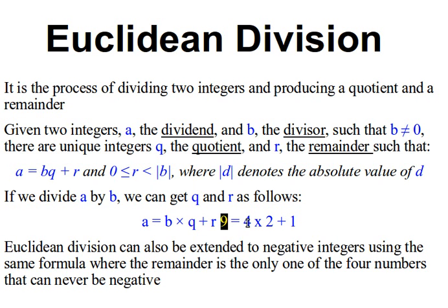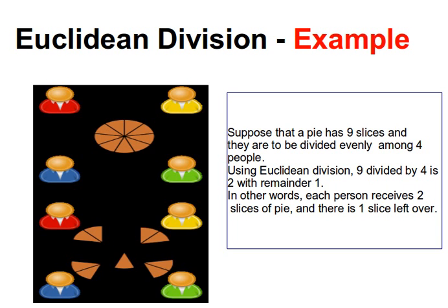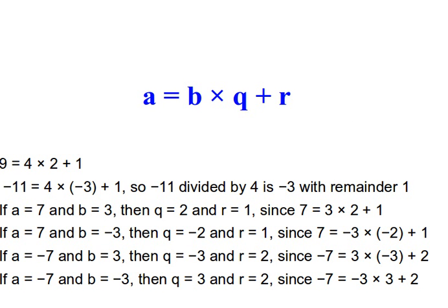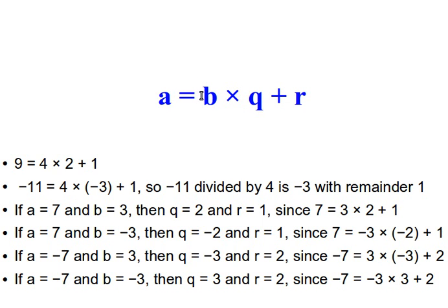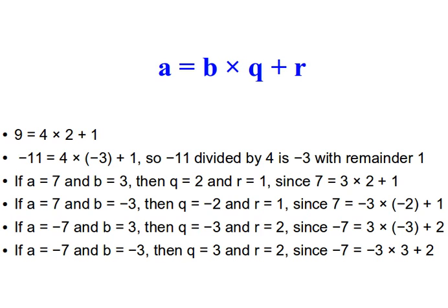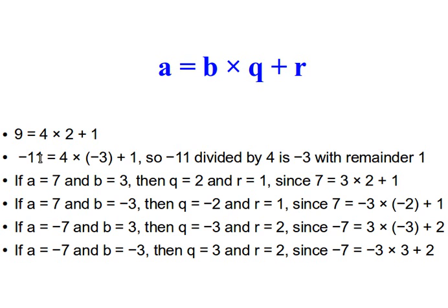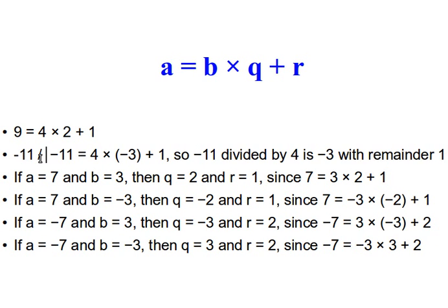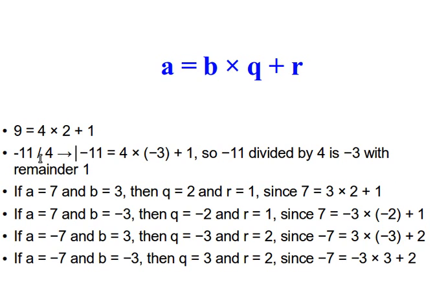Going back to the equation: 9 equals 4 times 2 plus 1 — so A is nine, B is four, Q is two, and R is one. For negative numbers: minus eleven divided by four gives us minus eleven equals 4 times minus 3 plus 1, because 4 times minus 3 is minus 12, and minus 12 plus 1 is minus 11. So minus eleven divided by four is minus three with remainder one.